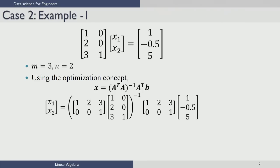Let us look at an Ax equal to b example system as shown on the screen. Here we have a matrix with 3 rows and 2 columns, which basically means that there are 3 equations in 2 variables — number of equations more than number of variables. We have to read these equations as x1 equal to 1, 2x1 equal to minus 0.5, and 3x1 plus x2 equal to 5.